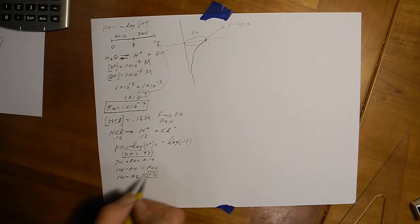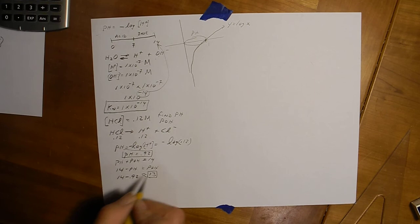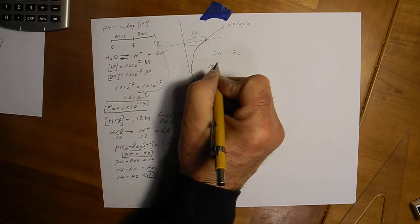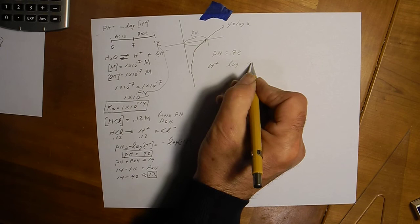So we found the pH and we found the pOH. What about going backwards? Suppose we know the pH is equal to, yeah, about 0.92. How would we find the hydrogen ion concentration? Well, what's the inverse function of log? That's the 10 to the x function. These are inverse functions of each other.